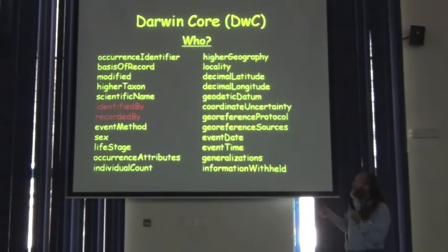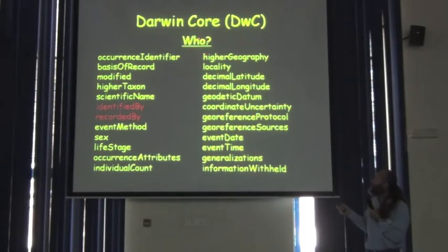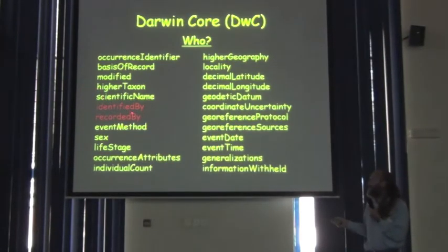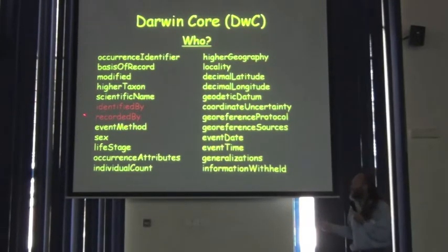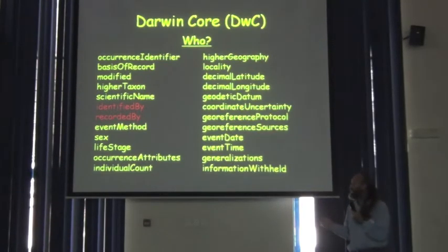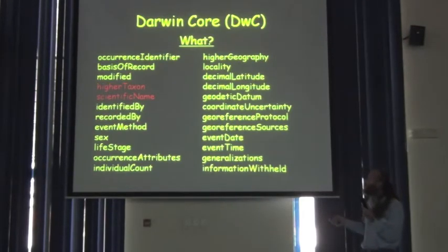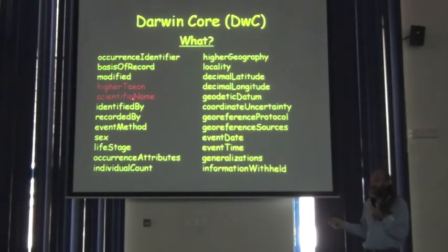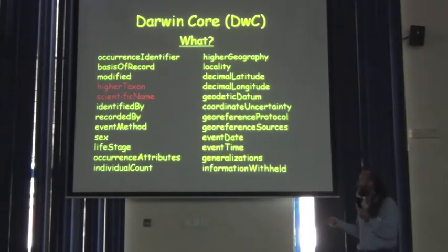If we look at the who terms in the Darwin Core, I've highlighted a couple of them. Identified by is the person who made the identification to a particular taxon. And recorded by — you might call this a collector or an observer — are people who were out in the field and who actually made the record. For the what terms, we have taxonomic terms: to what taxon, we have classification which is otherwise called a higher taxon, and we have scientific names. These are not all the terms, just examples. Within the taxon group you have genus, specific epithet, and all kinds of things.